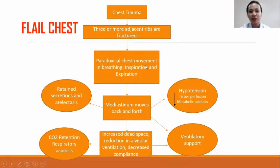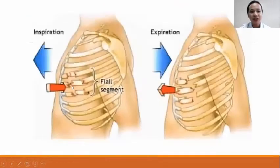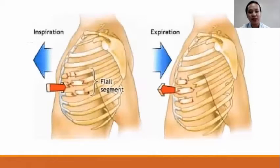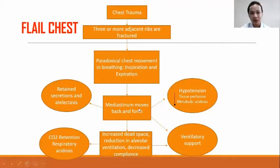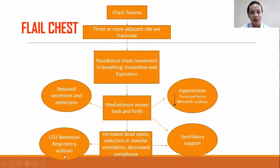There will be paradoxical chest movement in breathing where, on inspiration, the flail segment will be pulled in with a decrease in pressure while the rest of the rib cage expands. On expiration, the flail segment will be pushed out while the rest of the rib cage contracts, impairing the patient's ability to exhale. The mediastinum moves back and forth. This paradoxical motion results in increased dead space, reduction in alveolar ventilation, and decreased compliance. If gas exchange is greatly compromised, respiratory acidosis develops as a result of carbon dioxide retention. Hypotension, decreased tissue perfusion, and metabolic acidosis often follow due to the paradoxical motion of the mediastinum.